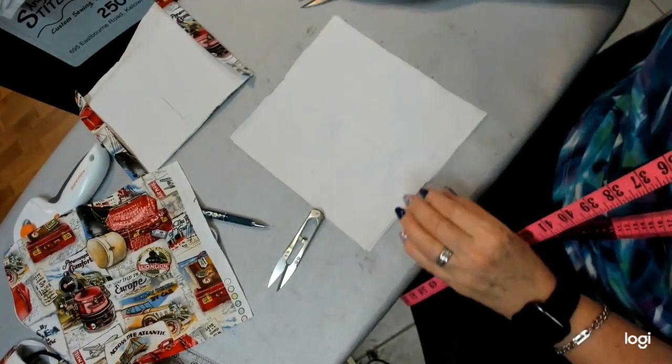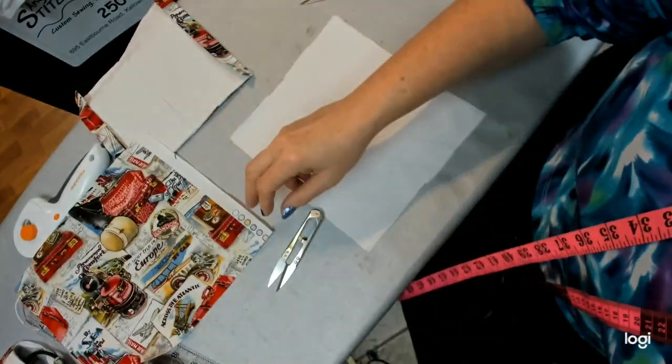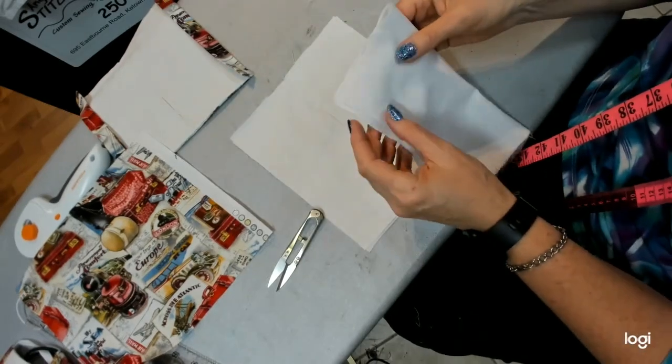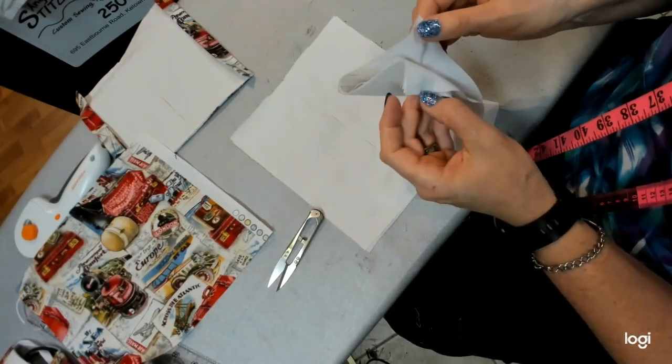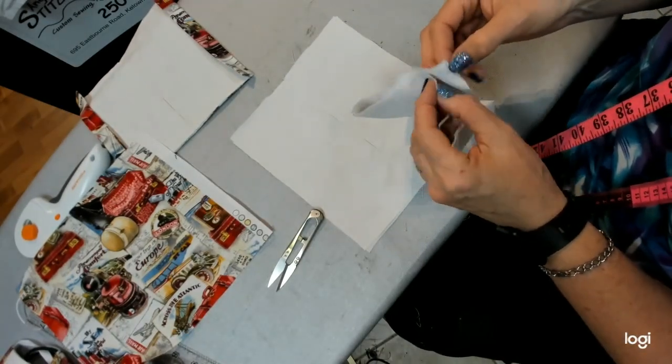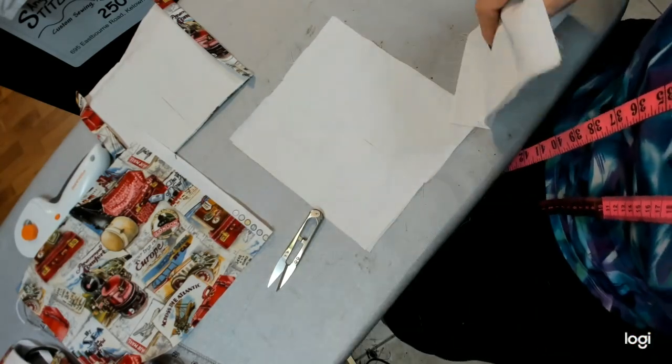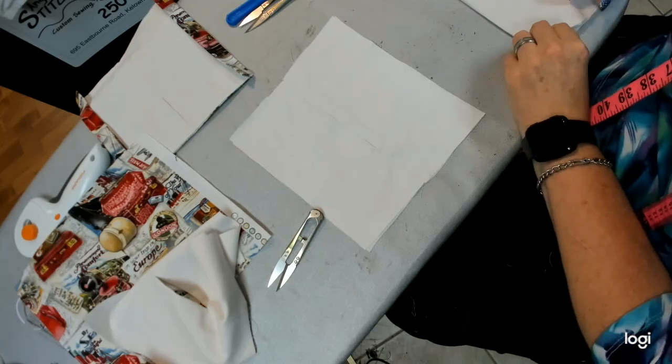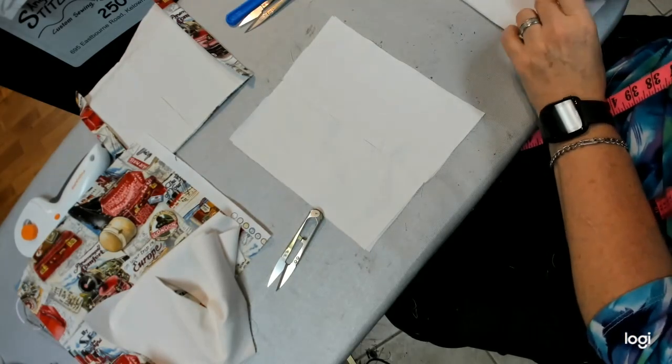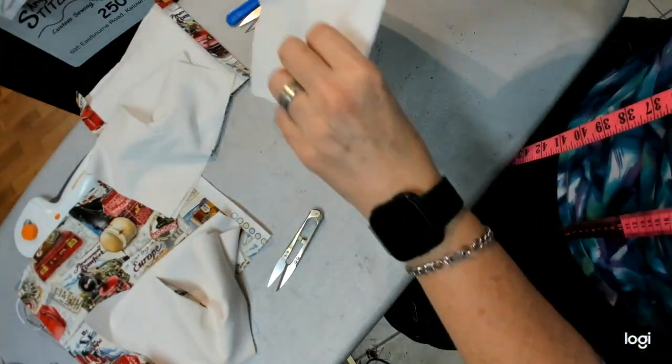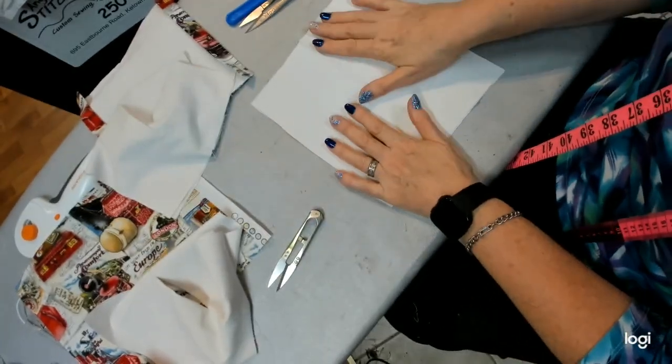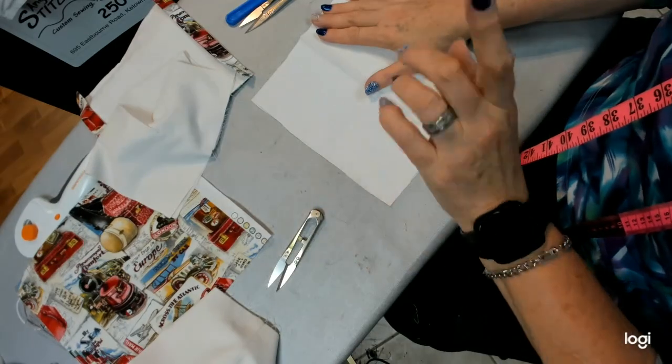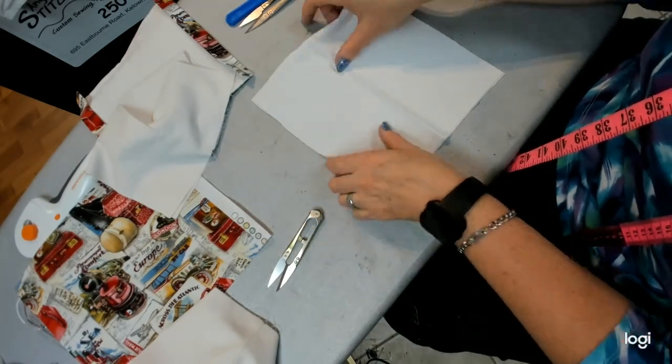Now if you were not wanting to put a removable mask, let's say you just want to do three layers of this instead and make it a built-in one, you wouldn't go through all this. Let me grab one that hasn't been done yet. You would just take your lining pieces and just stack them like this. That's it. And they would go into the mask like I'm about to show you with the one that has the slit.